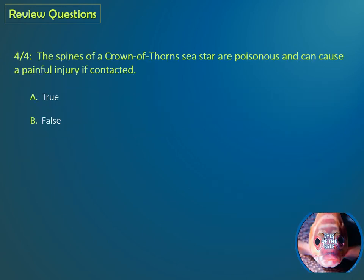Question four: The spines of a Crown of Thorns Seastar are poisonous and can cause a painful injury if contacted. Choice A is true or B is false. If you said A for true, you're correct.